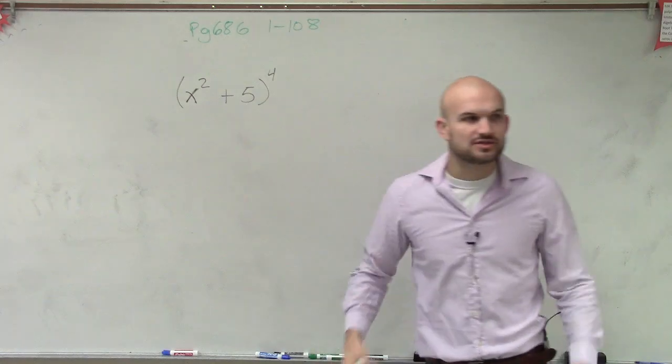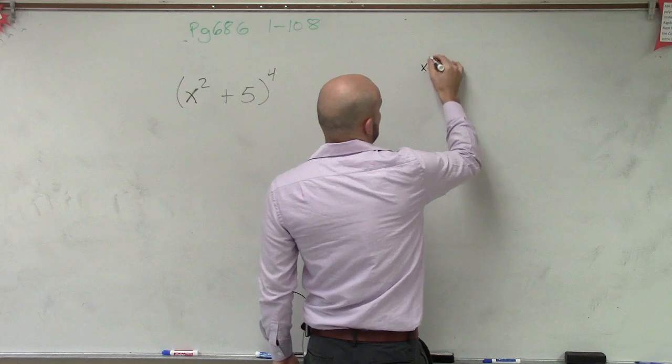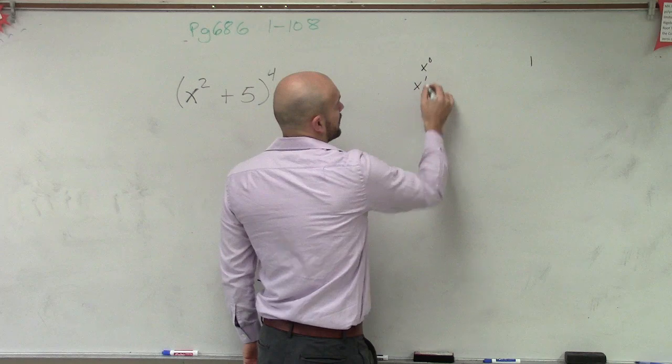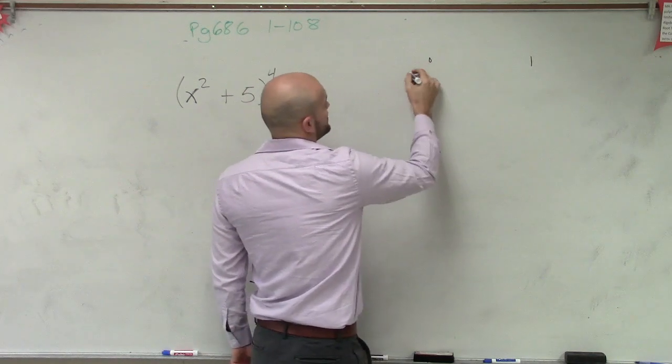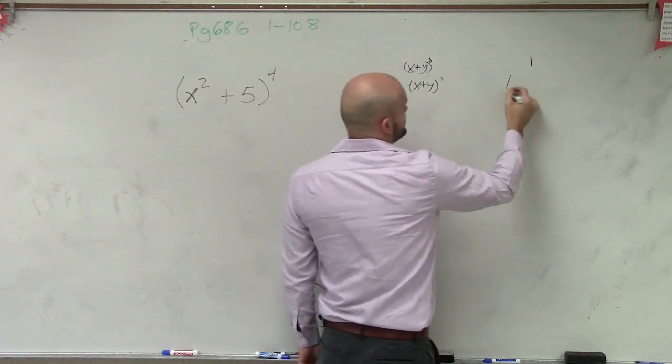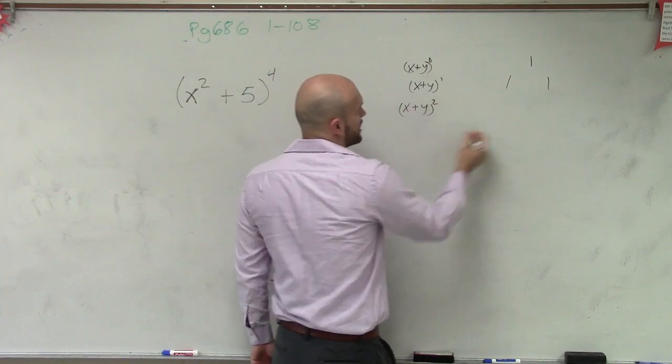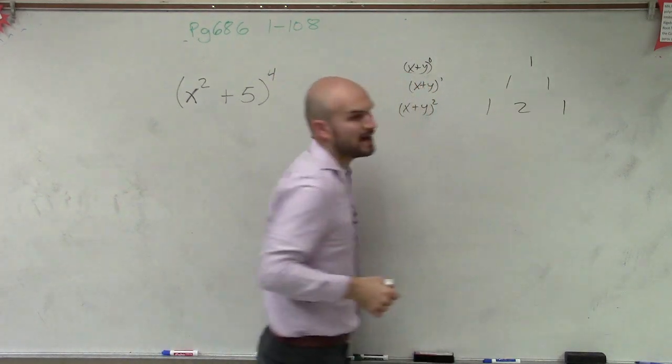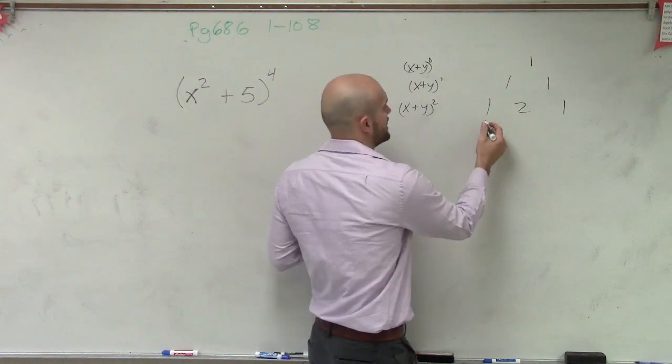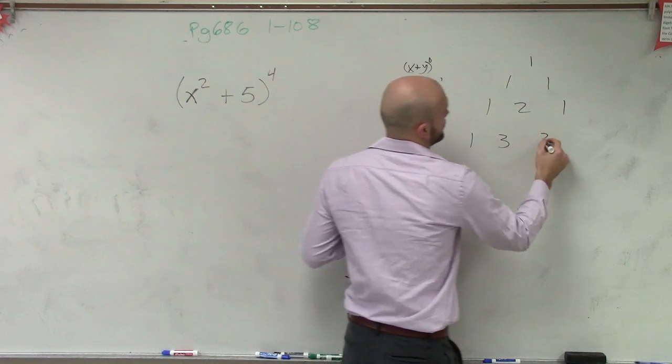And the rule with the coefficients was what we figured out by using Pascal's triangle. If we expand the term x to the 0, that left us with the coefficient of 1. It's really a binomial, right? x plus y to the first gave us two coefficients of 1 and 1. And then x plus y squared gave us 1, 2, 1. And then that came to the pattern that if I take these two terms, add them up, that gives me a 2. So then x plus y cubed is going to be 1, 3, 3, 1.